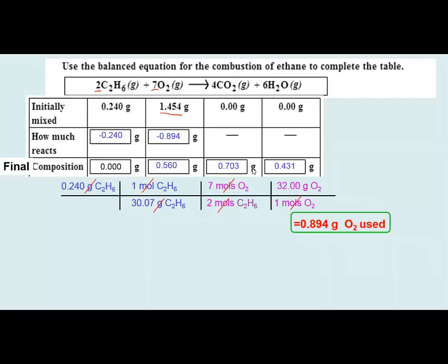Subtracting the 0.894 grams consumed from the original 1.454 grams of oxygen, we end up with 0.560 grams of excess oxygen left over. At this point we've completed quite a few stoichiometry calculations, including limiting reagent calculations, and we've completely filled in our ICF table for gram quantities. For your next exam, you should be able to fill in an ICF table with gram quantities, mole quantities, or numbers of molecules.